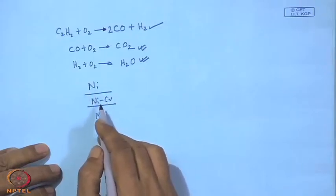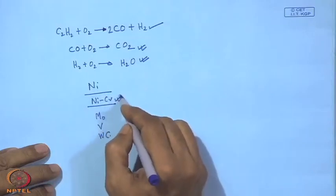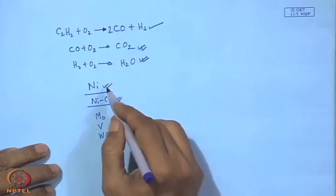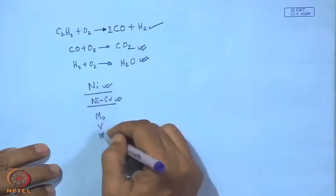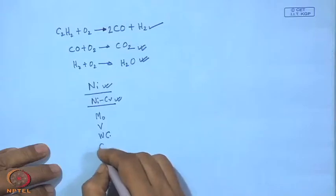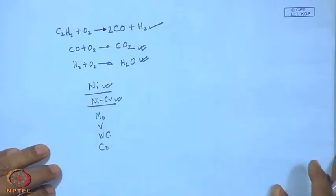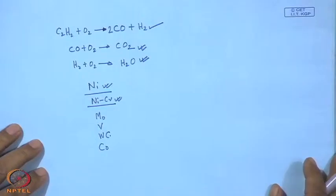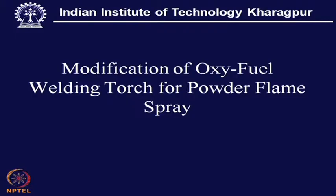Mostly it is nickel and nickel-chromium base alloys with some additives. These materials are available in the form of pre-alloyed powder. Elements like cobalt can also be included. The whole idea is to have corrosion resistance and wear resistance on a substrate that is rather cheap — a commonly available low carbon steel used for general purposes.